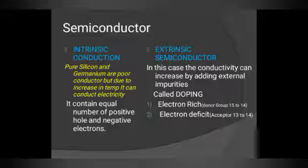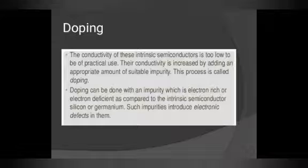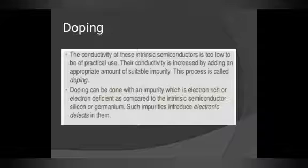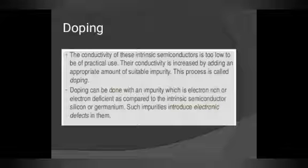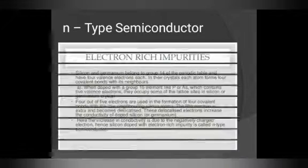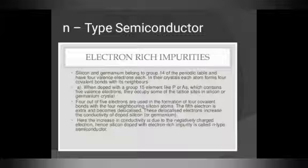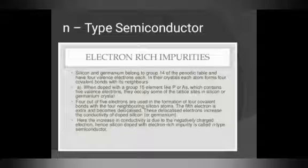The conductivity of intrinsic semiconductors is too low for practical use. Their conductivity is increased by adding an appropriate amount of suitable impurities — this process is called doping. This definition is asked many times in exams. Doping can be done with electron-rich or electron-deficient impurities as compared to the intrinsic semiconductor. In silicon or germanium, such impurities introduce electronic defects. This gives two types of extrinsic semiconductor: electron-rich (n-type) and electron-deficient (p-type).